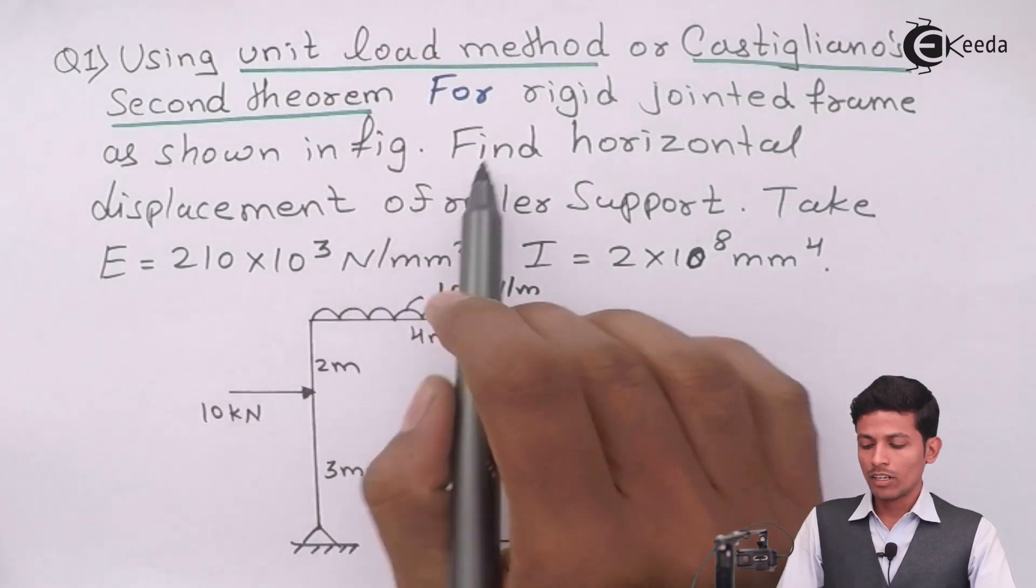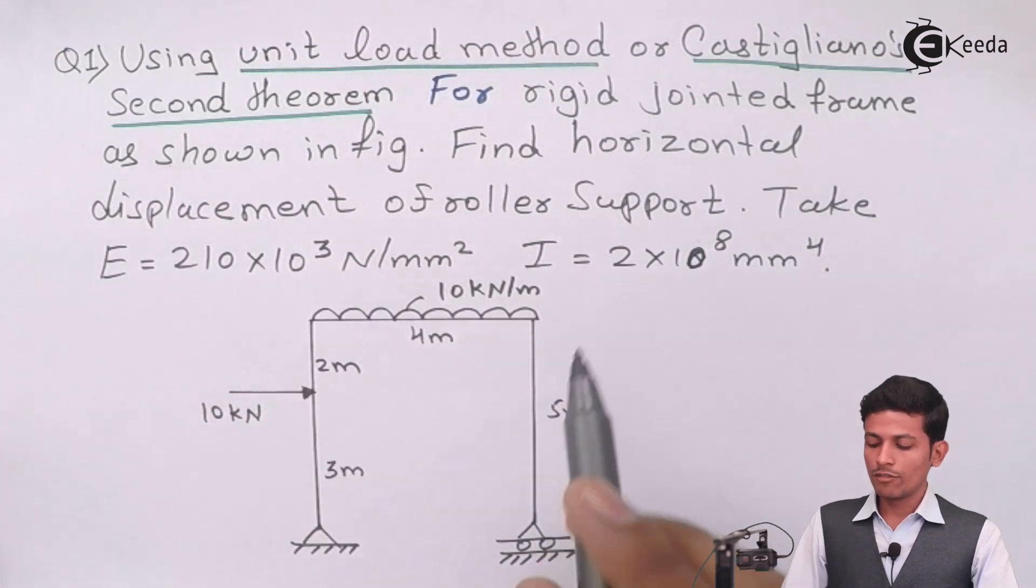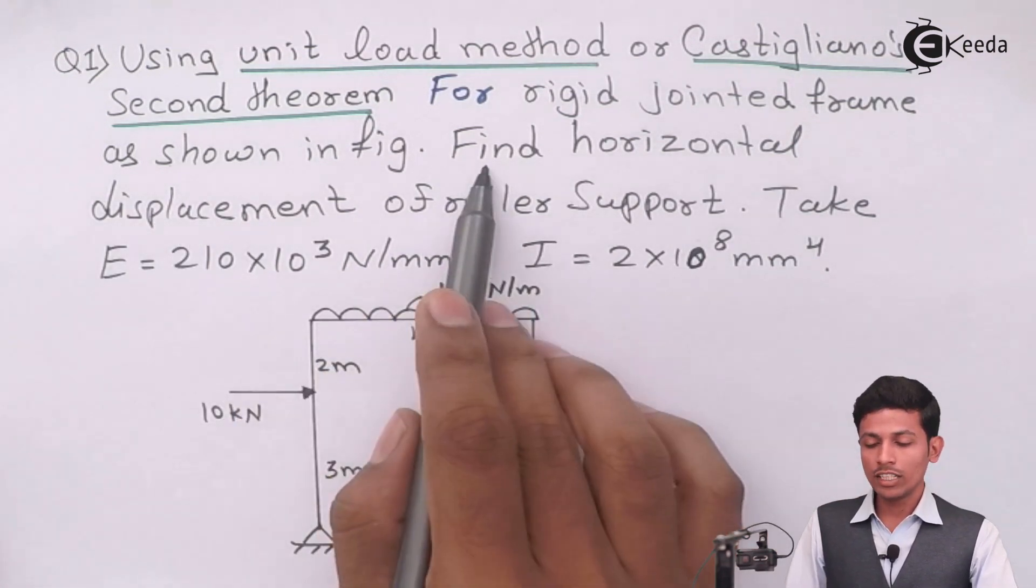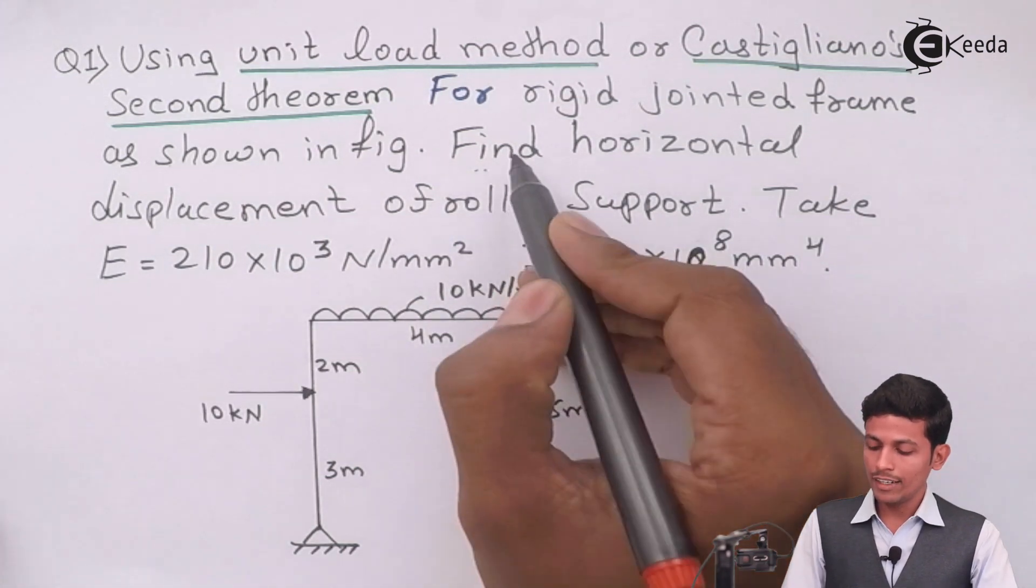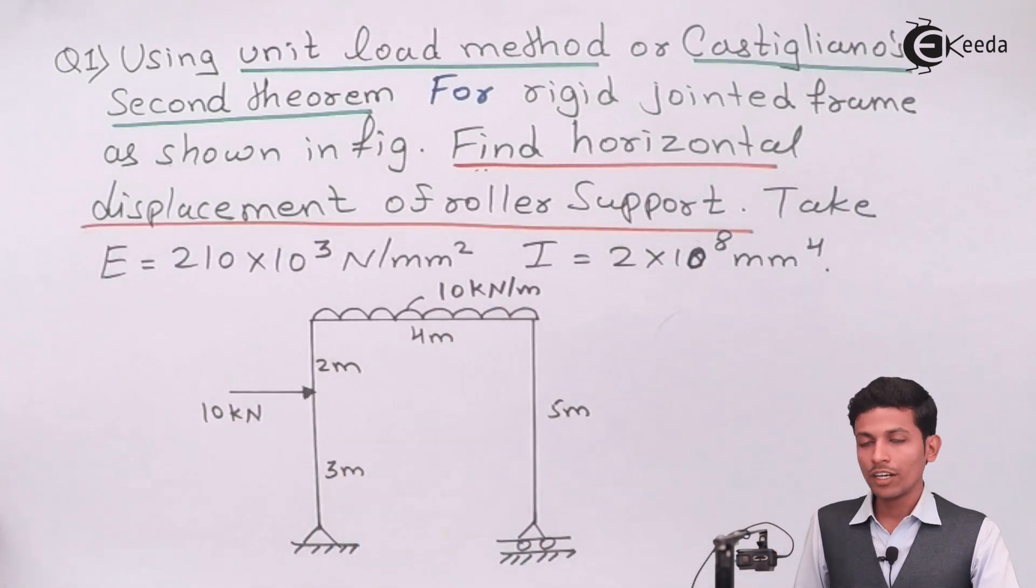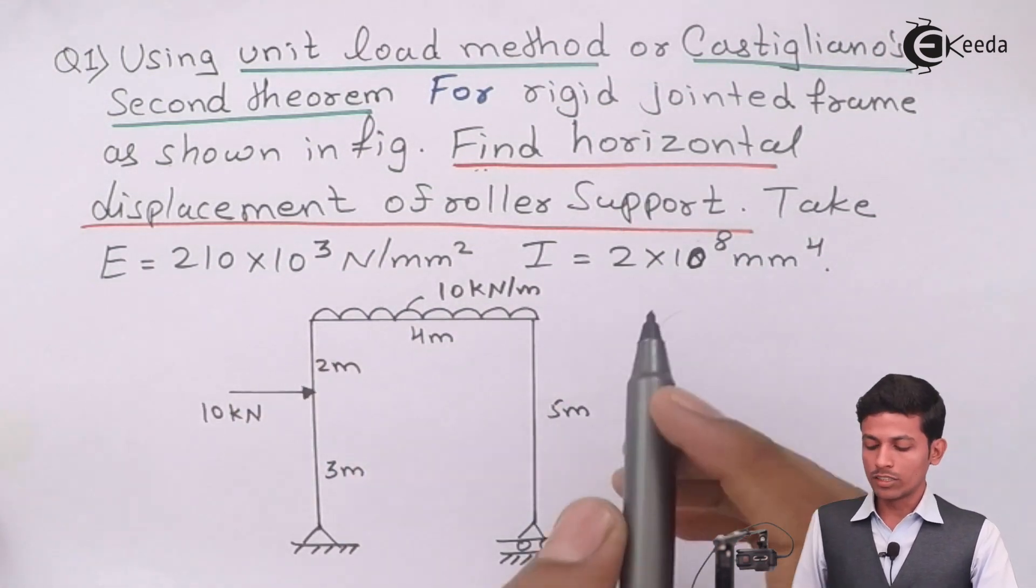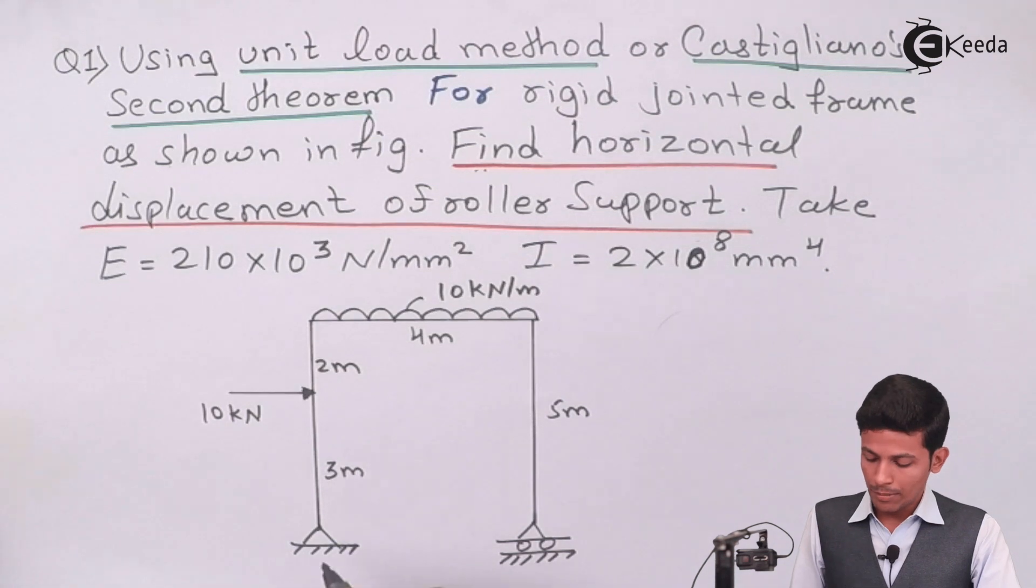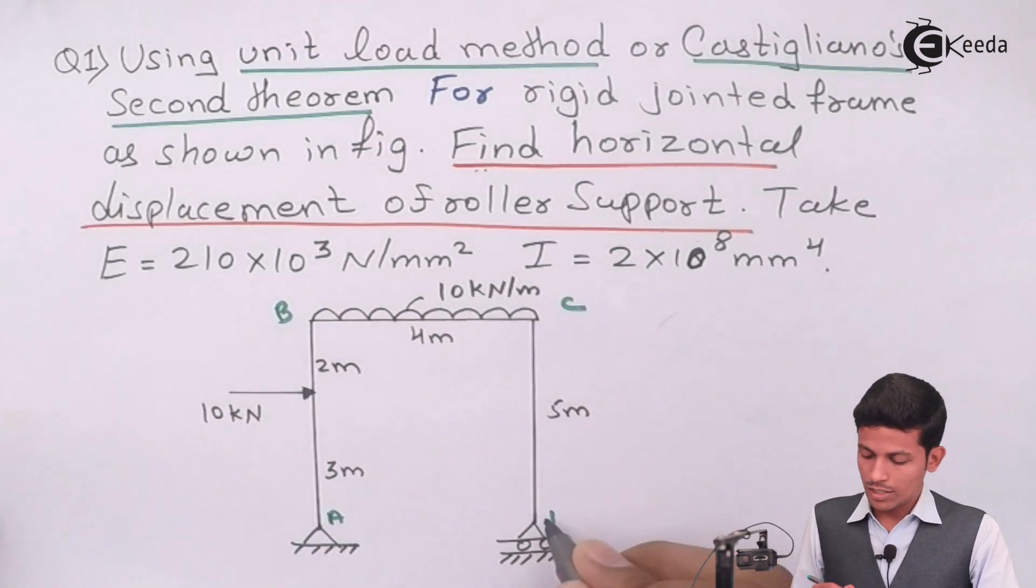For rigid joint frame as shown in figure, this is given figure. Find horizontal displacement of roller support. We have to find the deflection at roller support over here. Name is at A, this is your B, C and this one is D.